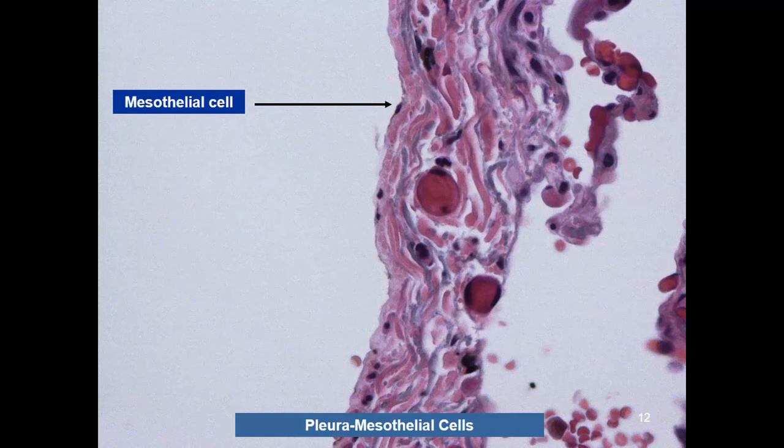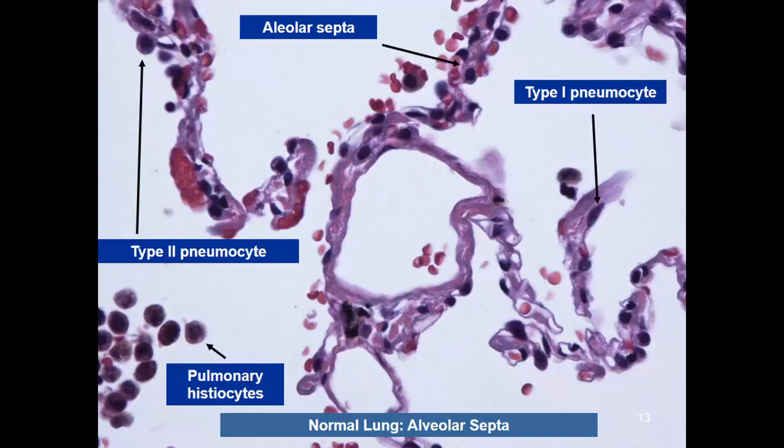For the tumor to be called pleural invasion, it has to involve the elastin layer. If the tumor comes up to the surface but doesn't penetrate the elastin, that's not pleural invasion — different size criteria apply.